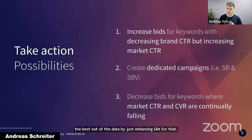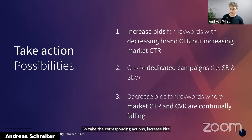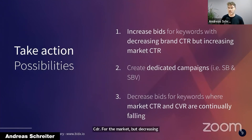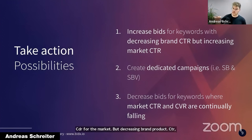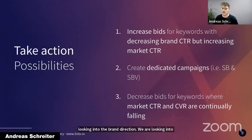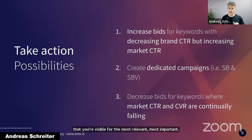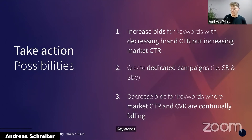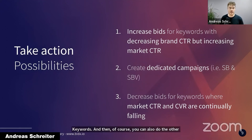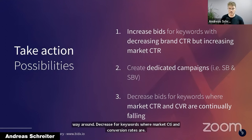Take the corresponding actions: increase bids for keywords where you see increasing CTR for the market but decreasing brand or product CTR. You can also create dedicated campaigns — looking at Sponsored Brands and Sponsored Brand Video — to make sure you are visible for the most relevant and important keywords. And of course, you can also do the reverse: decrease bids for keywords where market CTR and conversion rates are falling and you may not have higher relevance for that search term.